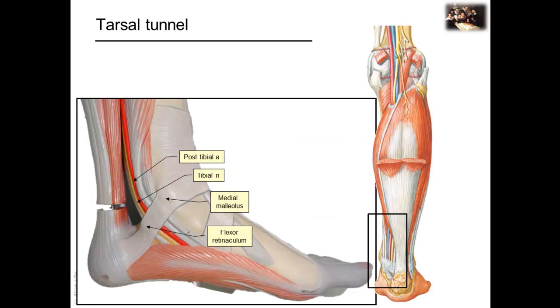The third area of transition is the tarsal tunnel, and this is located on the posteromedial side of the ankle. It is formed by adjacent bones and a flexor retinaculum. The flexor retinaculum holds the tendons in position.